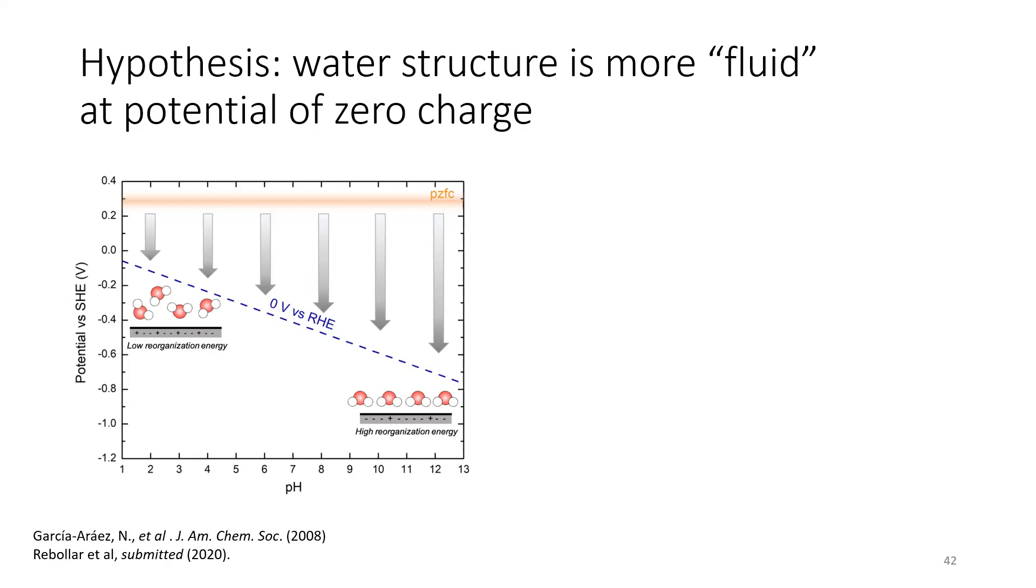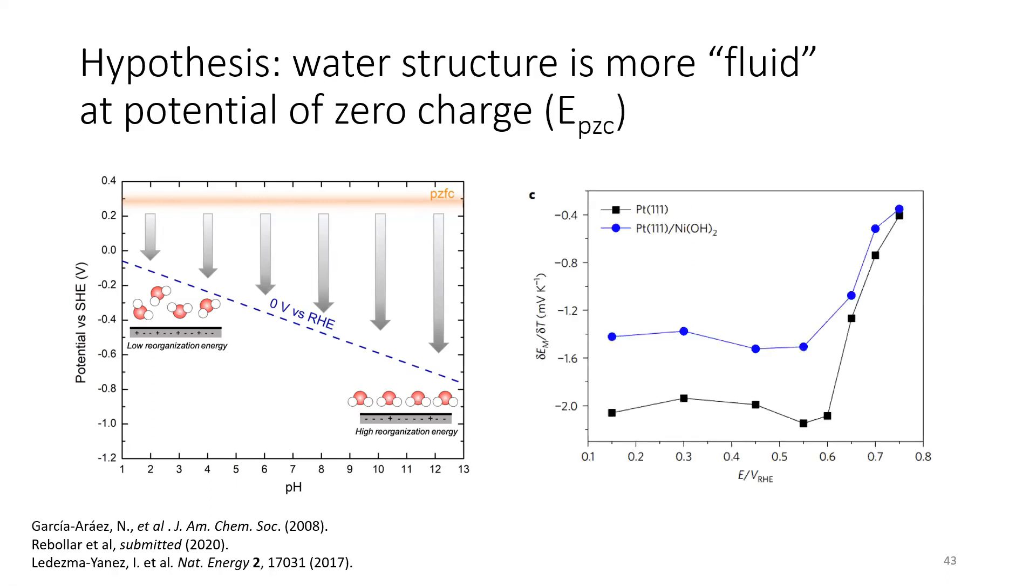So this is a hypothesis from originally Koper's group. A couple other people have picked it up. It says that water is more fluid at the potential of zero charge. So at some potential, all the water dipoles will line up just right, and it will be a net zero. And the hypothesis is that when you're at that zero, it can move around very fast. If all the waters are aligned, H up or H down, it's going to be more rigid and hard to move. And that distance, that rigidity is going to be described by the difference between the voltage that we're at and the voltage that is the potential of zero charge.